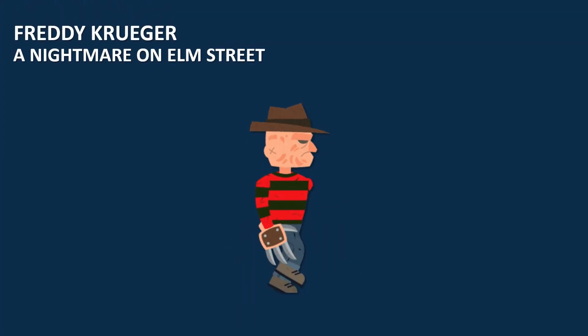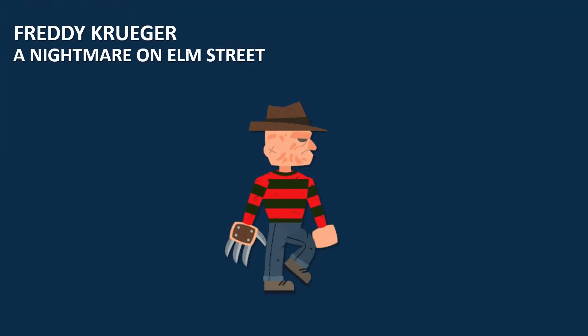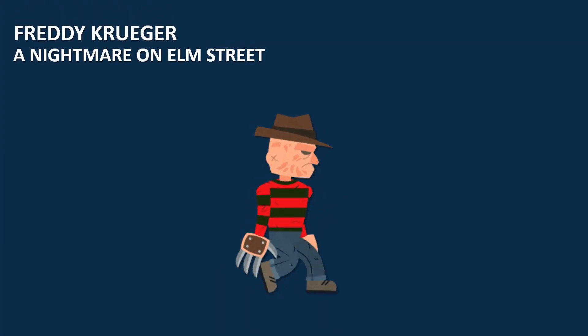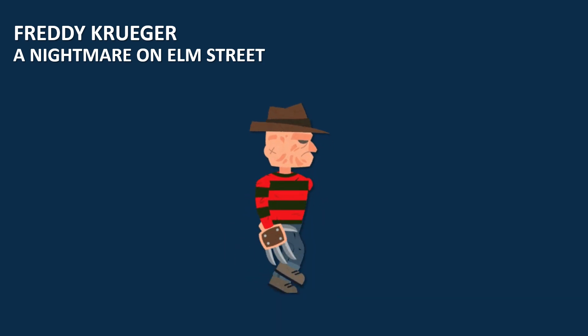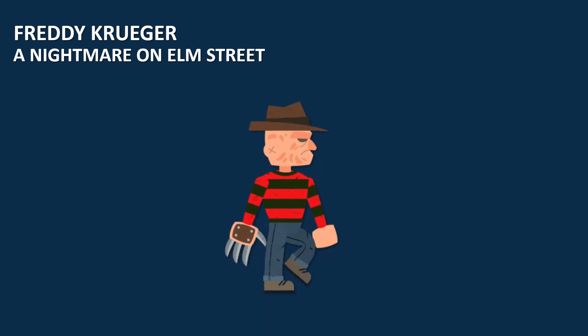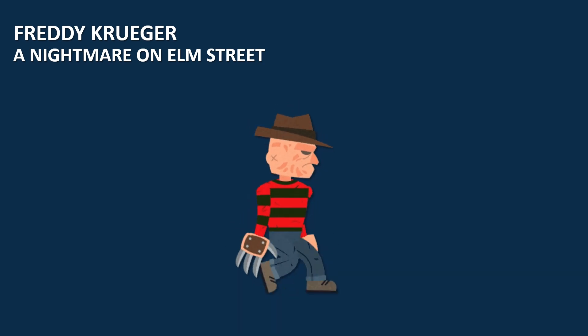Freddy Krueger is the iconic antagonist in A Nightmare on Elm Street. Created by Wes Craven, he haunts the dreams of teenagers in Springwood using a distinctive glove with razor-sharp knives.